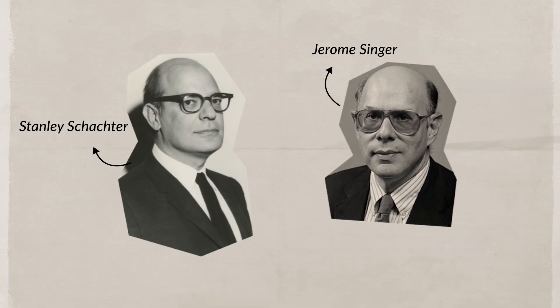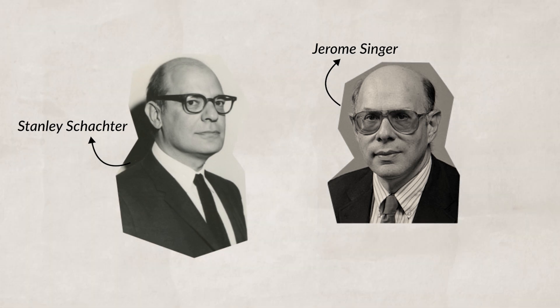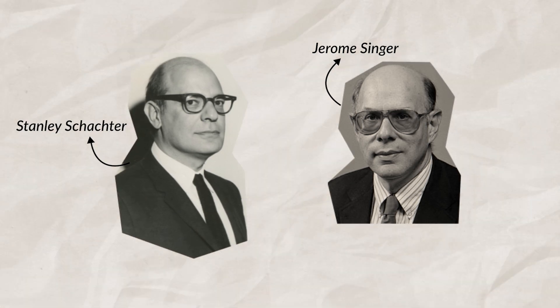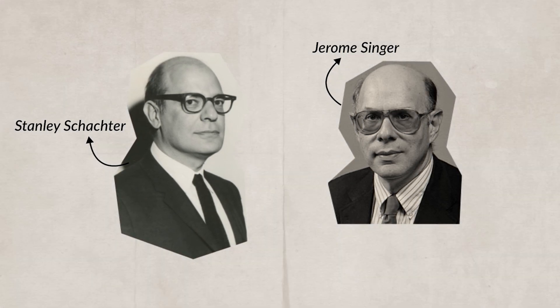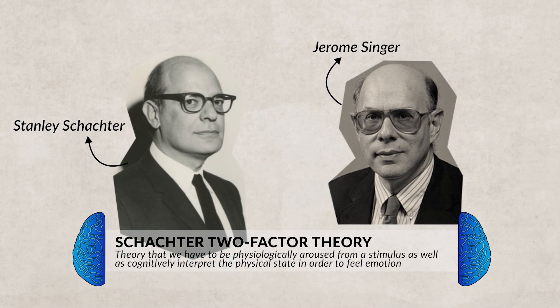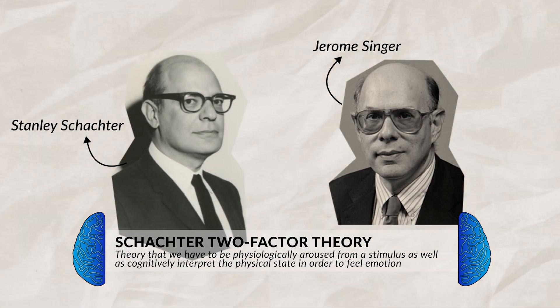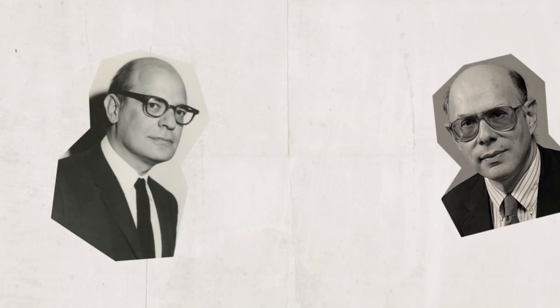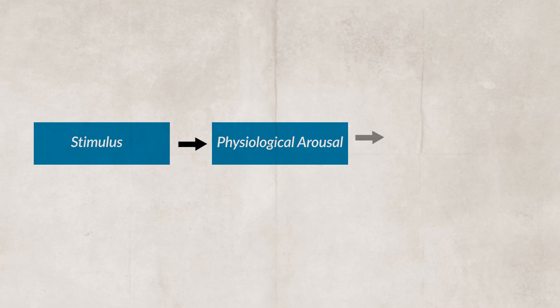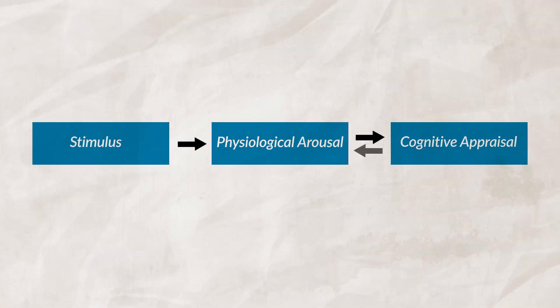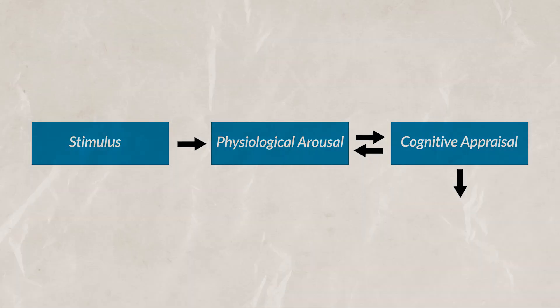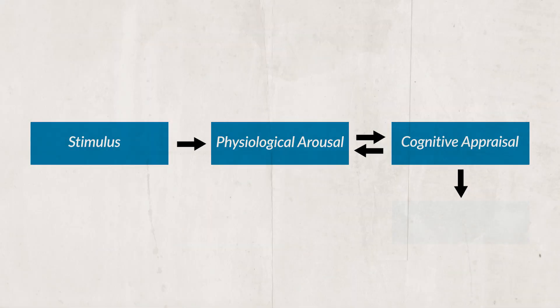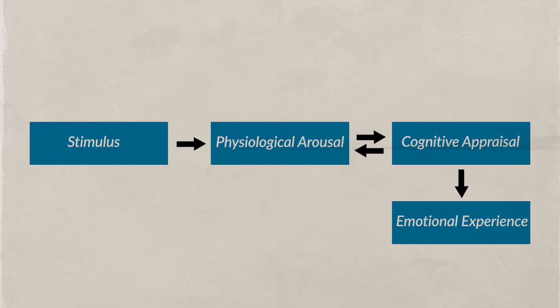Notice here that the heart pounding did not cause the feeling of fear. Stanley Schachter and Jerome Singer looked into how we interpret our experiences and how that impacts our emotions. We can see this illustrated in the Schachter Two-Factor Theory, which states that emotions occur from both physical and cognitive awareness to a stimulus. For example, if you hear a bear roar while hiking — that would be the stimulus — which would cause your heart to start pounding and your body to react. You would then use your cognitive appraisal to process the bear's roar and determine that you probably should be afraid and run. This would be the emotional experience.